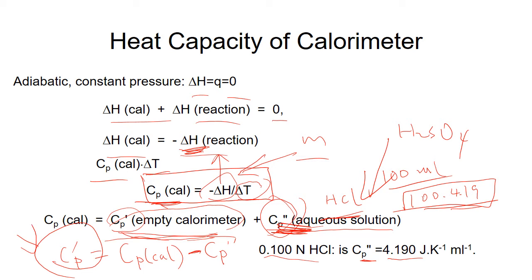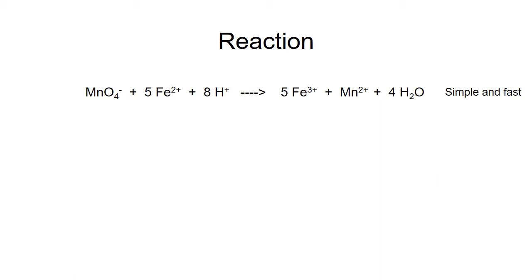We calculate the empty calorimeter heat capacity CP prime because for different reactions, CP double-prime may change. For the standardization step we use HCl, but for the chemical reaction steps we may use sulfuric acid, so CP double-prime differs from reaction to reaction, while the empty calorimeter CP prime remains the same. The redox reaction we measure is between permanganate and Fe²⁺: permanganate is reduced to Mn²⁺ and Fe²⁺ is oxidized to Fe³⁺.